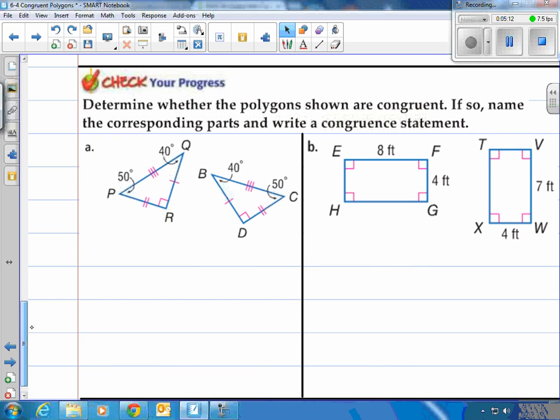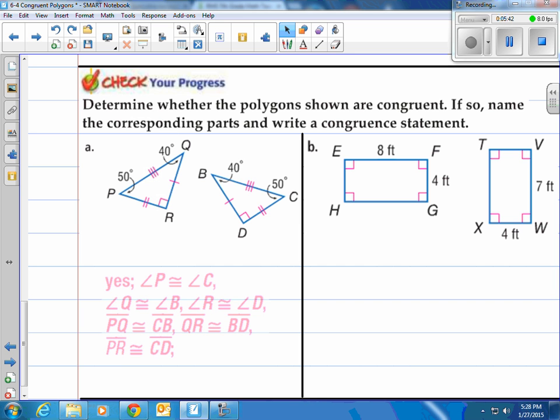Alright, you give it a shot here. It says determine whether the polygons shown are congruent. If so, name the corresponding parts and write a congruent statement. Let's look at A here. I can see that I've got a 40-degree angle, a 50-degree angle, and a 90-degree angle. And we have the sides with one tick mark, two tick marks, and three tick marks. So in A, these are definitely congruent polygons.